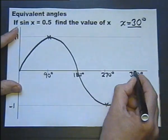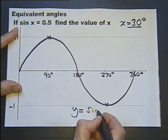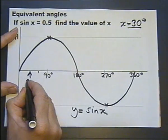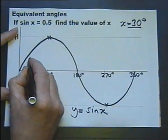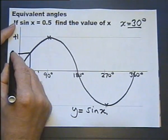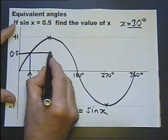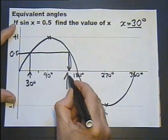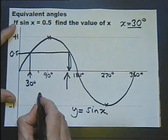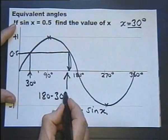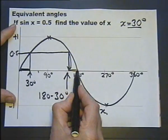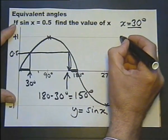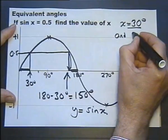There we have the graph of y equals sine x. 30 degrees is there, in other words if this graph was drawn perfectly that would be 0.5 there. But it shows there's another angle over here with the same sine value. Looking at the symmetry of the graph, if that's 30 degrees there, that must be 30 degrees there, therefore this angle must be 150 degrees. Therefore x is 30 degrees and 150 degrees.